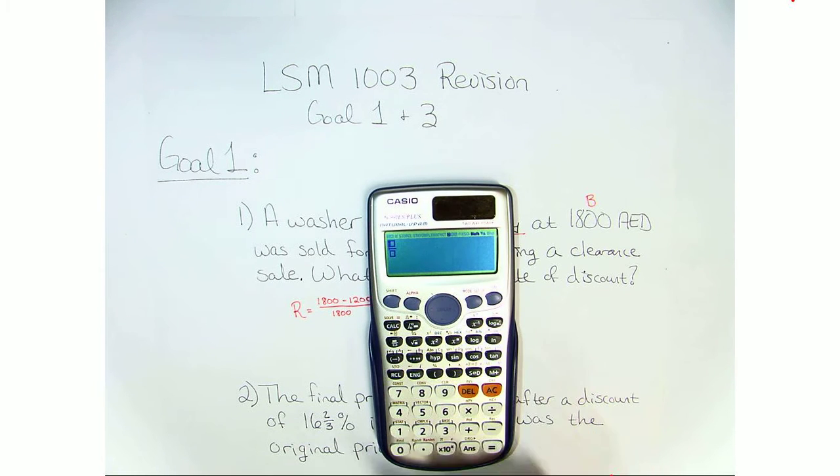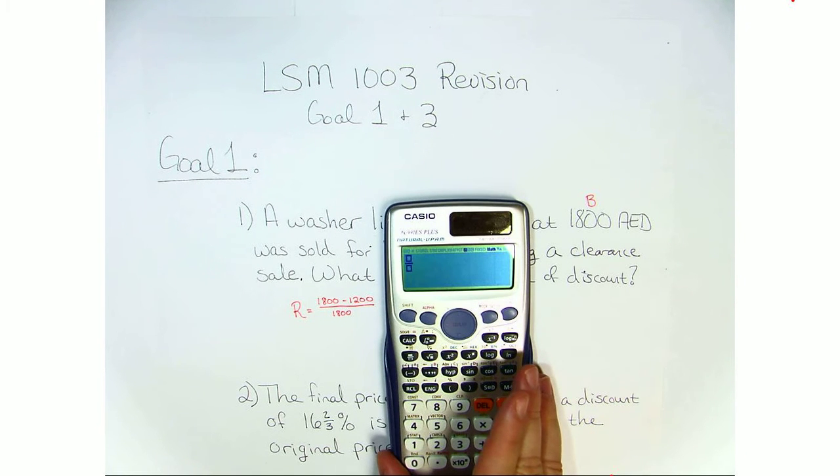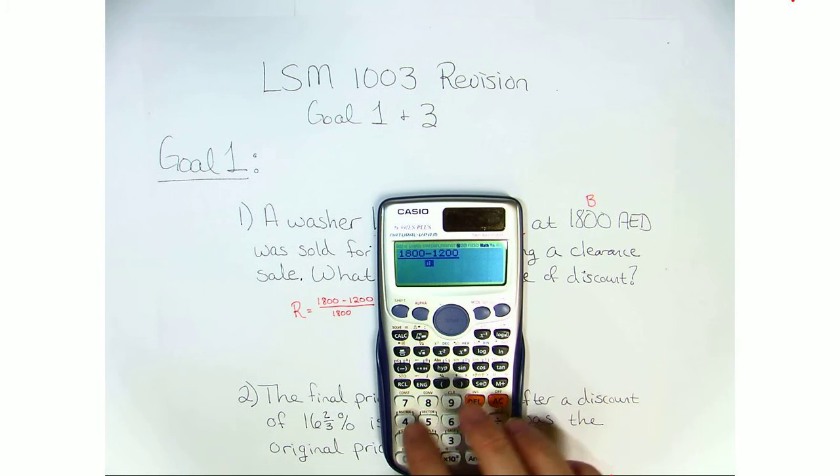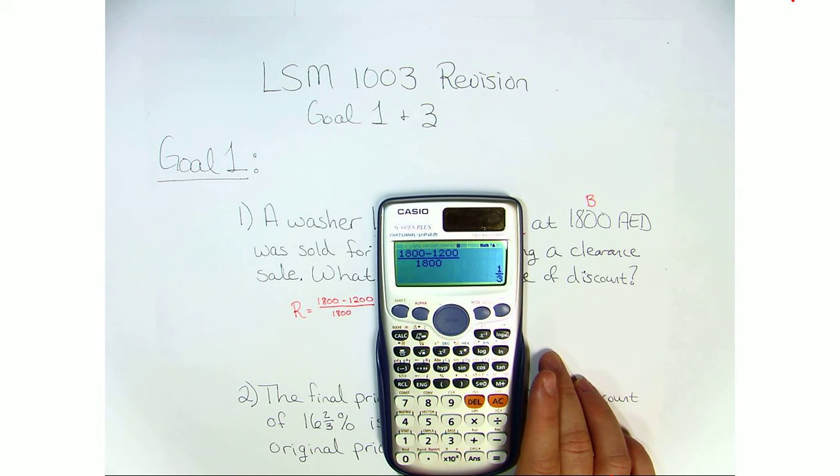So we're going to put this in the calculator exactly as we see it. We hit the fraction key and we're going to do 1,800 minus 1,200 over 1,800. And we get 1 over 3.